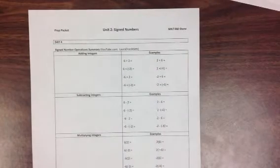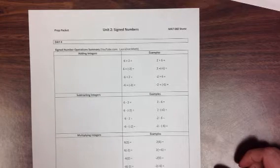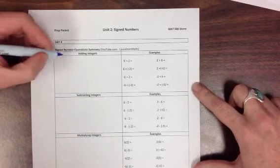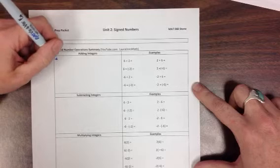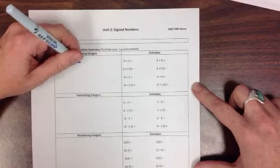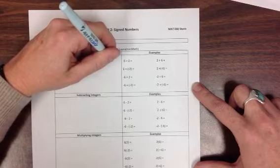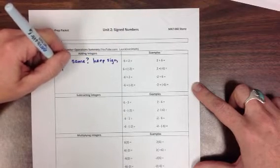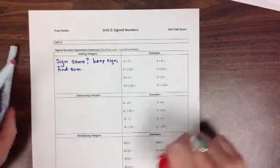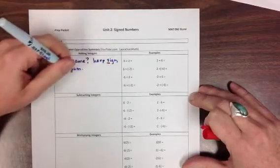This video is part one of your summary of the different operations that you do with signed numbers. So to summarize this, when you are adding integers, the rule to remember is if the sign is the same, keep the sign, and find the sum. I remember that because it sounds like the 'Susie sells seashells by the seashore' rhyme with all of these S's in it.